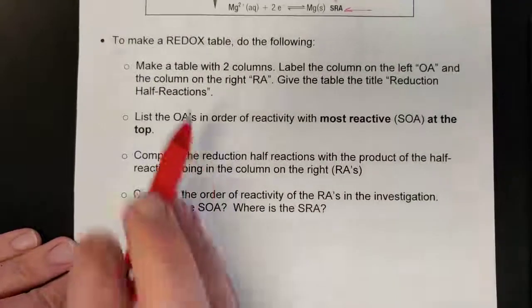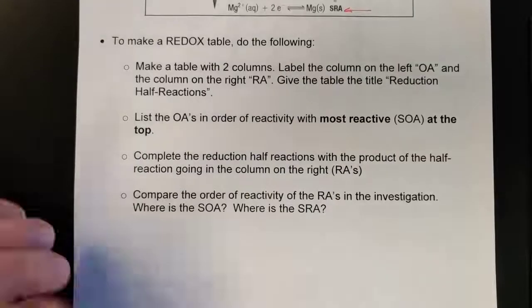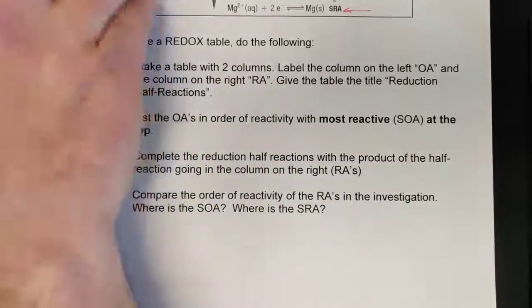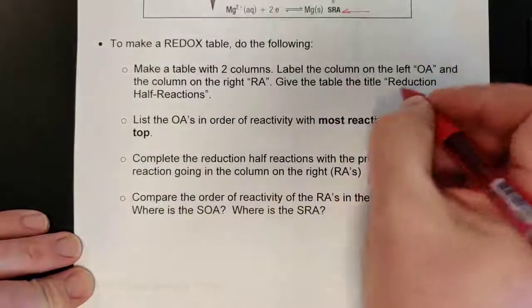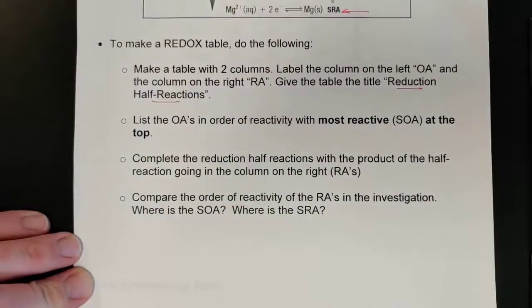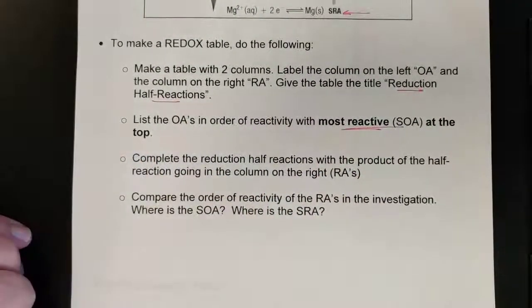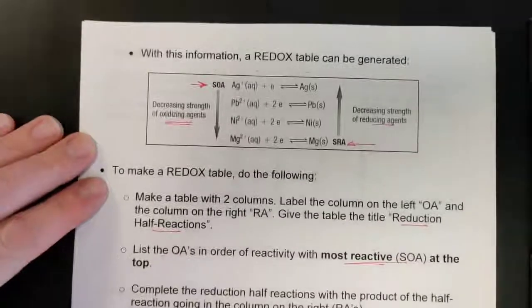To make a redox table, you make a table with two columns — OAs on the left, RAs on the right — written as reduction half reactions. List it so that the strongest oxidizing agent is on the top left, which puts the strongest reducing agent on the bottom right. These are fairly easy to construct when you think about which species was most reactive and which wasn't.